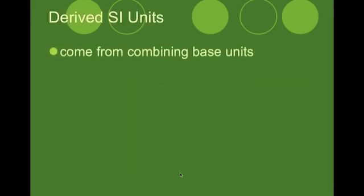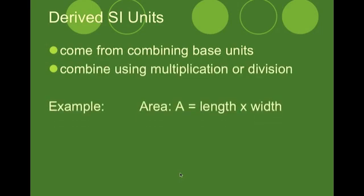Now a derived SI unit, it comes from combining base units. We combine them using either multiplication or division. We see an example of this is area. Area, the formula for it, is length times width. So we'll have meters times meters, which our final unit will be meters squared.